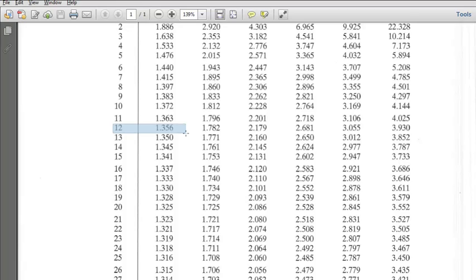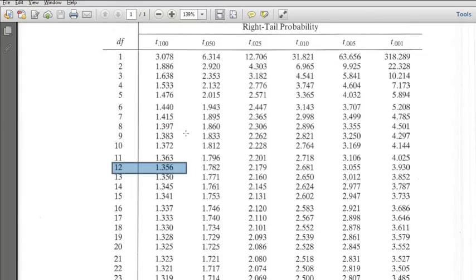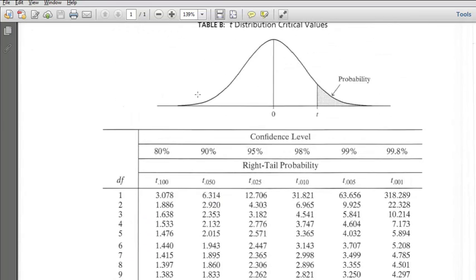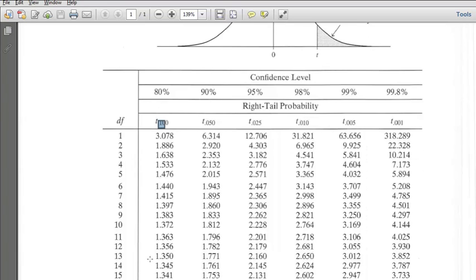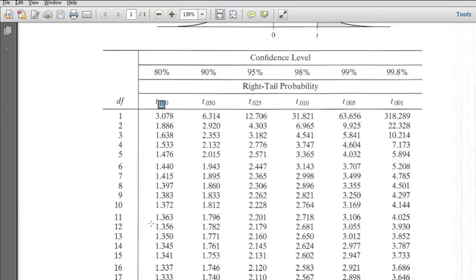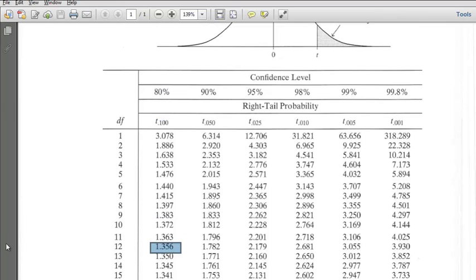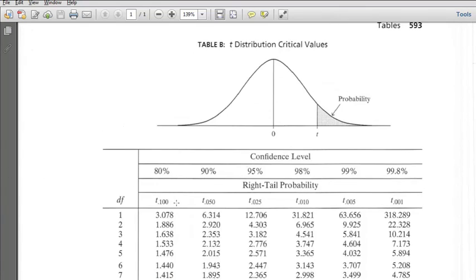If we're looking at 12 degrees of freedom. So if our problem has 12 degrees of freedom, and we are interested in a p-value of 0.10, then we go down here, and we find that the critical t-value is 1.356. So that's how you use a t-table.